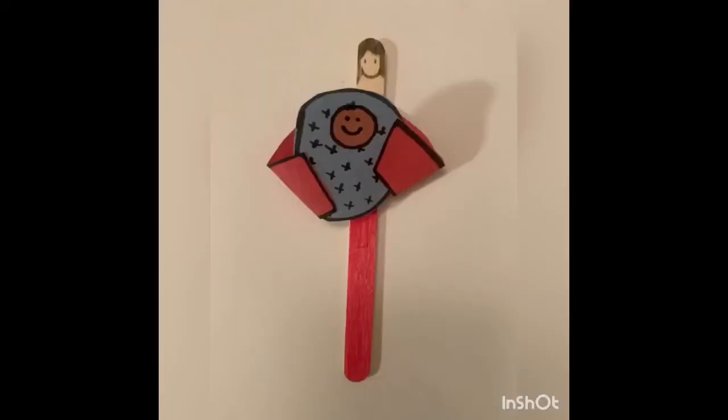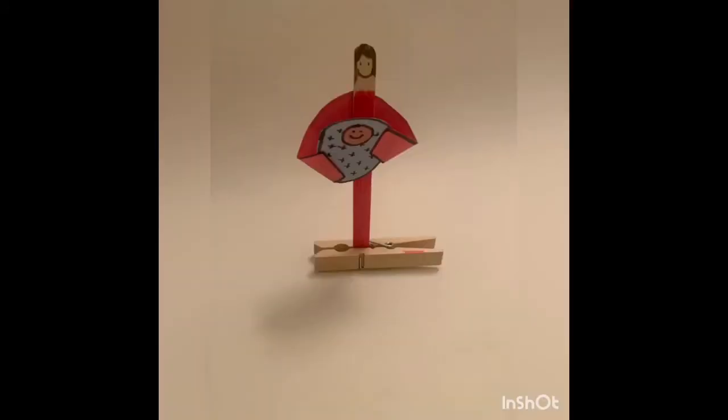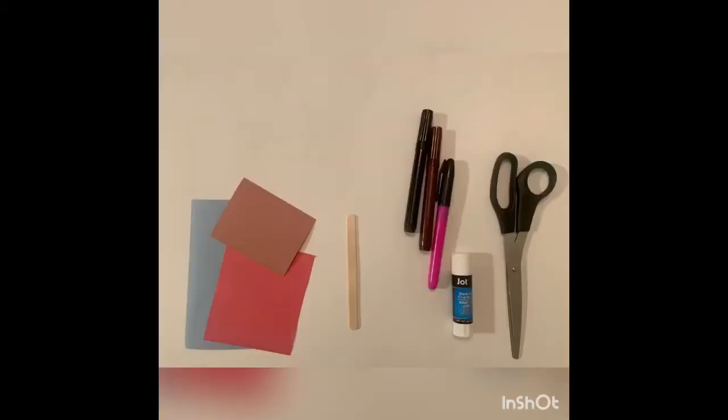Hi boys and girls. Today we'll be making a Hannah and her baby craft. This is what she looks like standing up, and the other pictures look like what she looked like when sitting down. So these are the items that you'll need: scissors, glue, markers, popsicle stick, and colored paper.